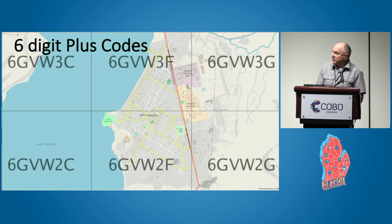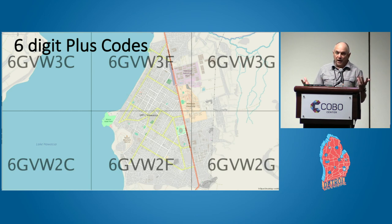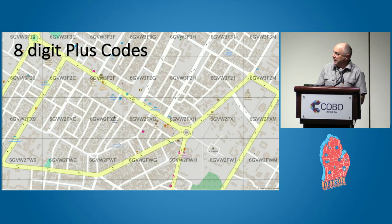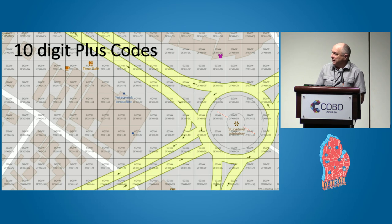One of the things about plus codes is there are no words that can be spelled with the combinations of letters and numbers — no ones, no zeros, no vowels — so you end up with something that kind of looks like a British postcode. Continuing to zoom in, dividing by 20 one more time, this is the city of Hawassa, Ethiopia, the center of town. Dividing by 20 one more time you end up with 10-digit plus codes, and you can see the buildings there.